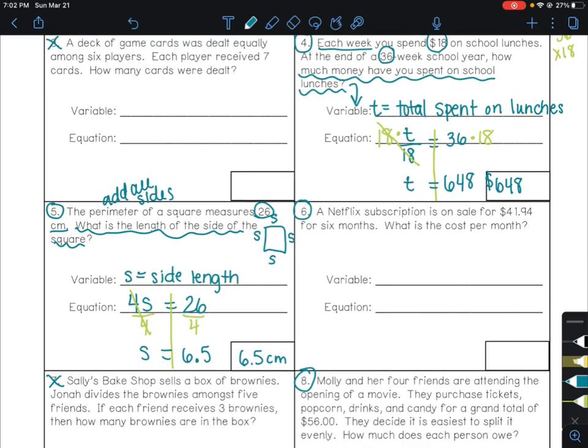Number six. A Netflix subscription is on sale for $41.94 for six months. What is the cost per month? So we have the total cost, and that cost is happening over six months. We want to know what is the cost per month, meaning the cost for just one month. So I'm going to say C equals cost per month.